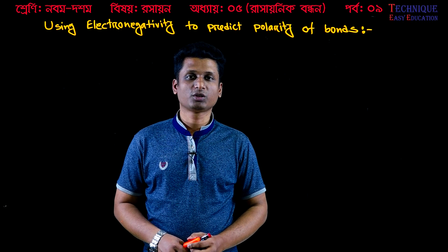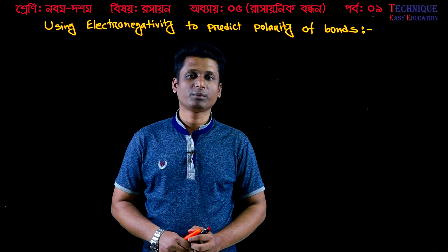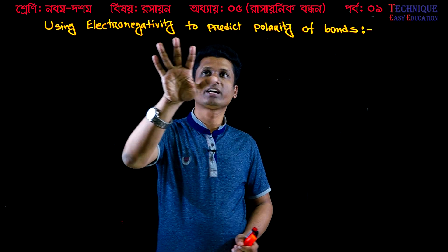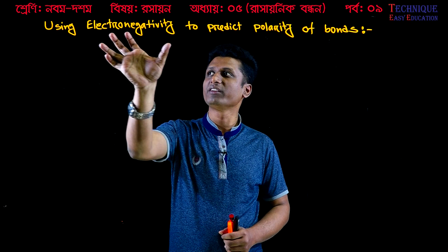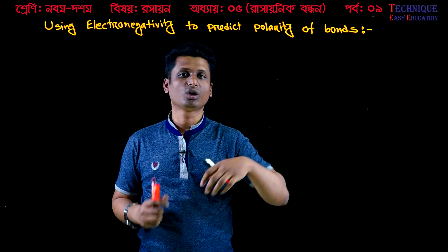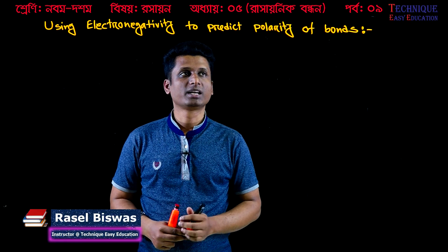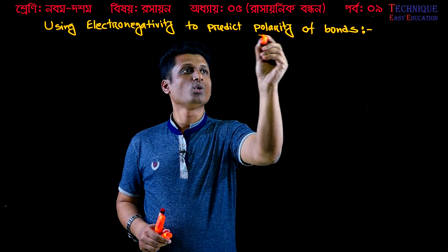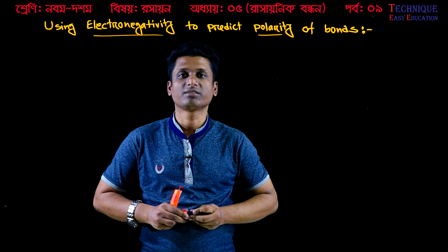Hello viewers. Today we have written about using electronegativity to predict polarity of bonds. We will use electronegativity to predict polarity of bonds, but first we will know these two words: polarity and electronegativity.